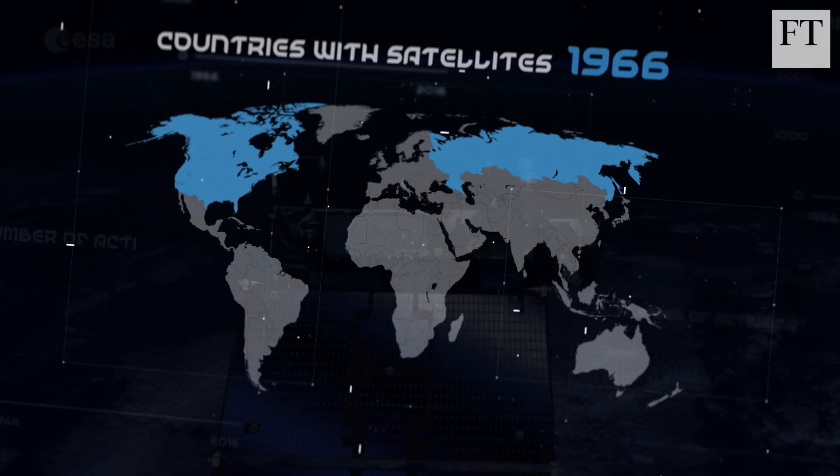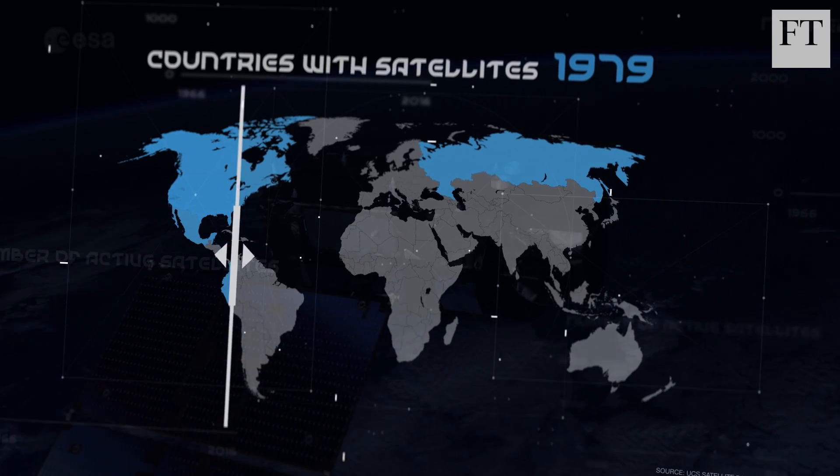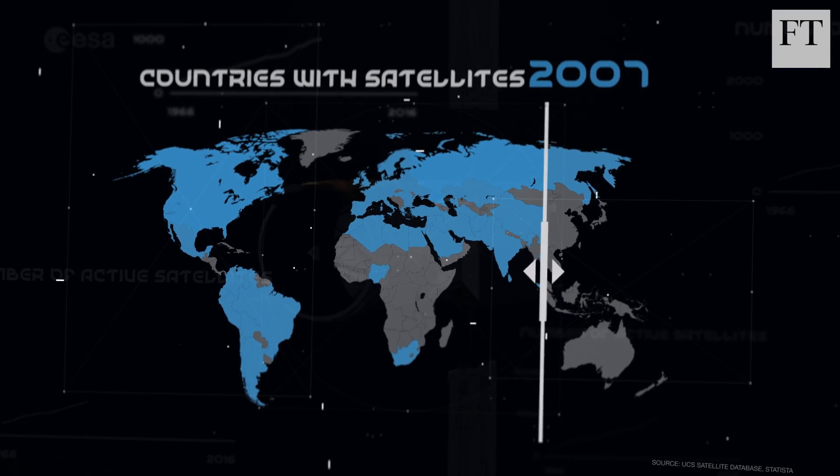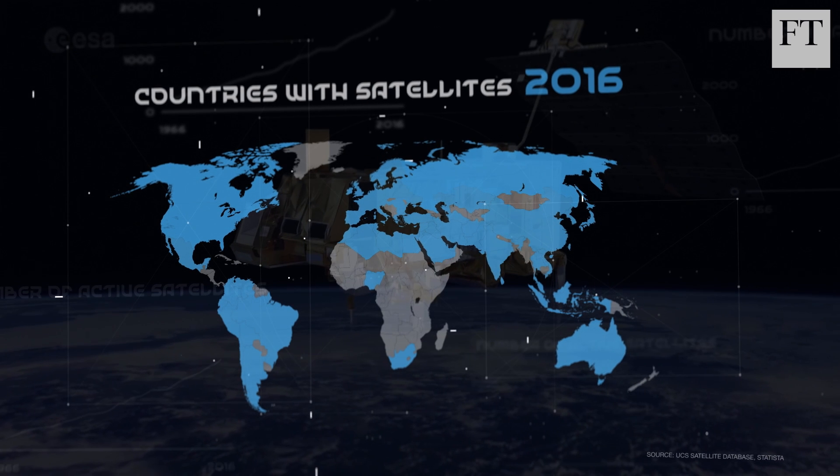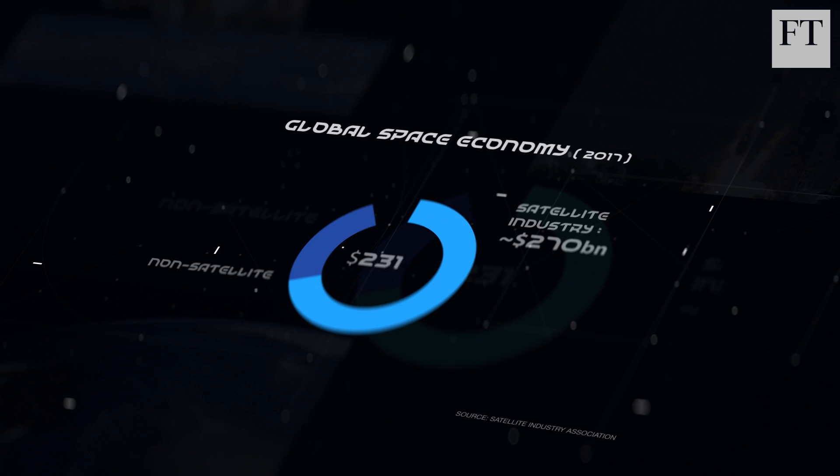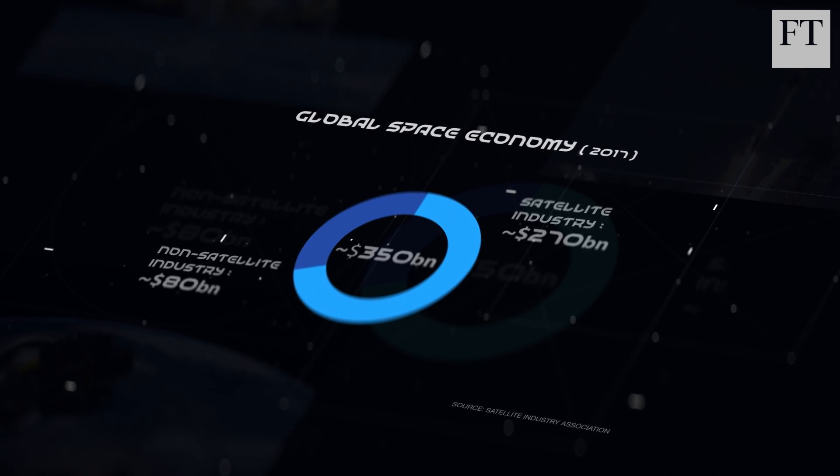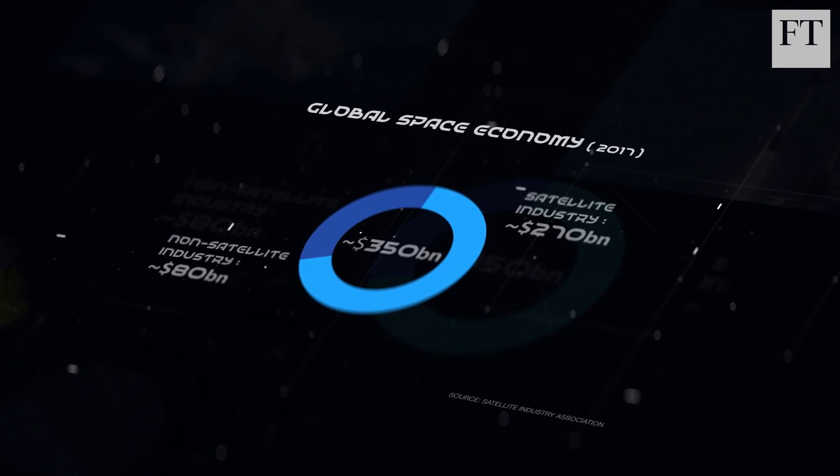The number of nations using satellites has grown steadily over the past 50 years, and it continues to climb. There are now about 2,000 active satellites in orbit, and the satellite business accounts for around three-quarters of a global space industry worth about 350 billion dollars.